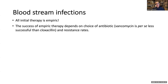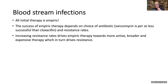Success also depends on resistance rates. If ampicillin resistance is 40–50–60% depending on location, empiric therapy with ampicillin alone will fail in 50% of cases. Increasing resistance rates drive empiric therapy towards broader, more active, and more expensive agents. When confidence in ampicillin is lost, clinicians move to piperacillin-tazobactam; when that fails, to meropenem — and there is a constant drift towards safer, more expensive, broad-spectrum agents, which in turn drives further resistance.